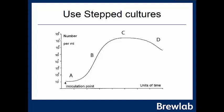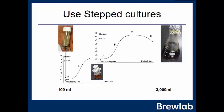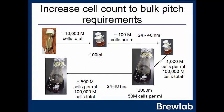Looking at the growth curve: from inoculation we get slow growth initially, then exponential growth, then it tails off into stationary phase and death phase. We want to make sure we are not taking yeast in the death or stationary phase — we want to target the top of the exponential phase. So using step cultures, we go from a slope into 100 millilitres, grow to the maximum point, then pitch into 2 litres and grow to the maximum point again. Starting from 10 million cells we grow to 100 million cells per millilitre, culturing for 24–48 hours, getting a thousand million cells per millilitre — 100,000 million cells total in that 100 millilitres.